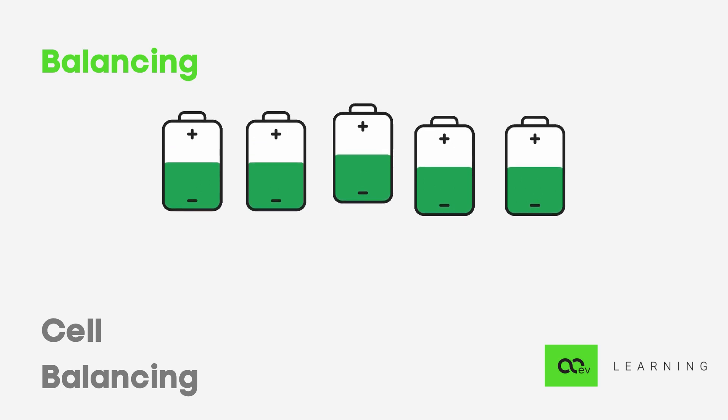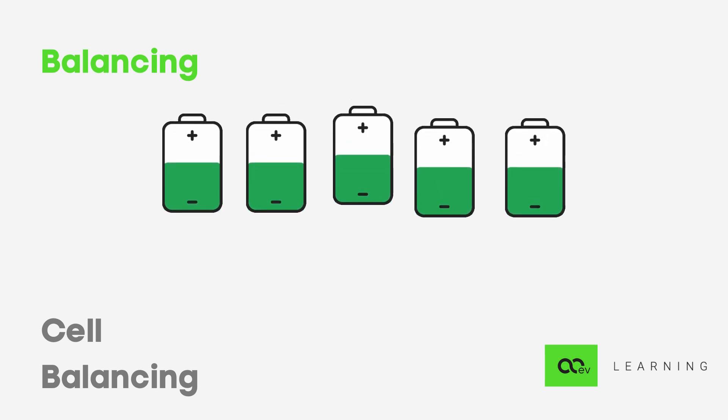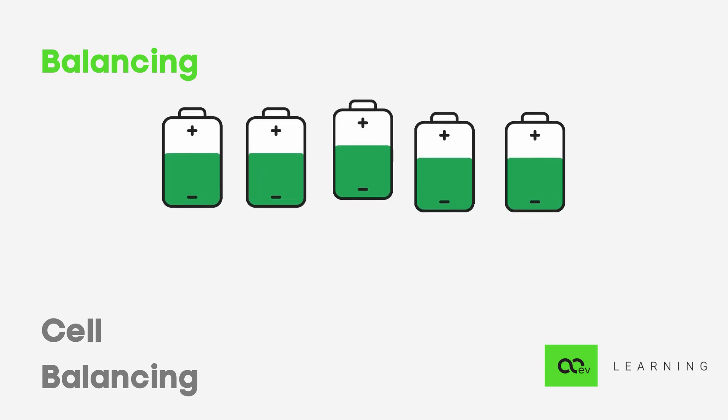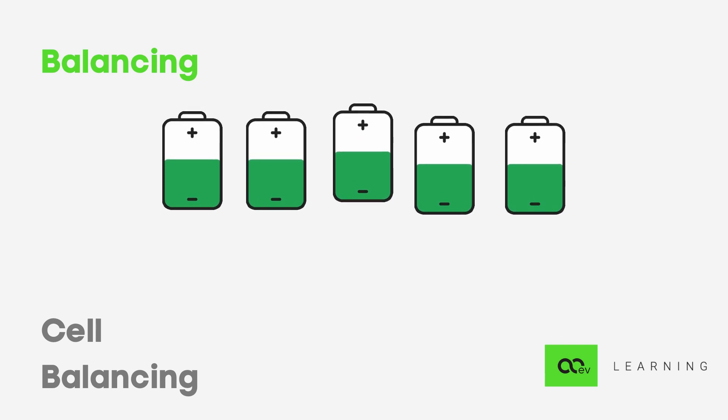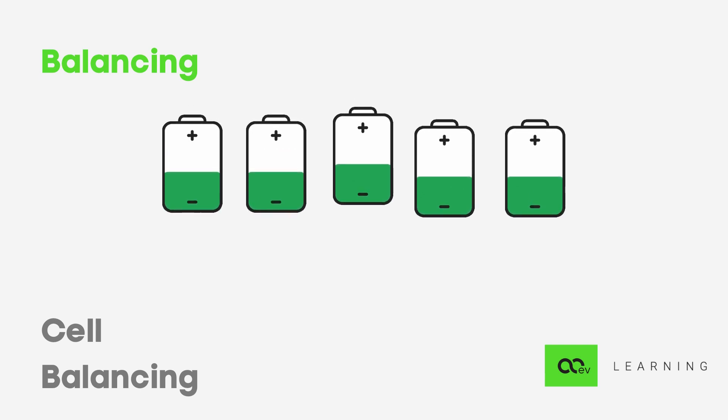Imbalance is caused by anything that can make one cell's SOC (state of charge) diverge from others. There are several reasons behind it. Unfortunately, we don't live in a perfect world, so there will be some differences in the cells, and temperature differences between cells also play a role in unbalancing.